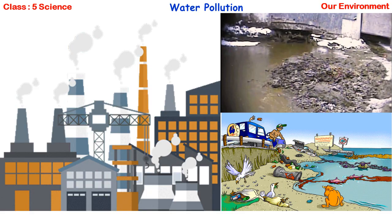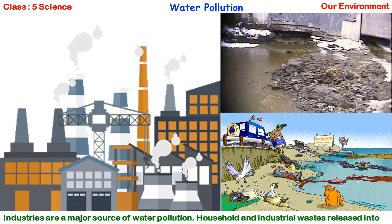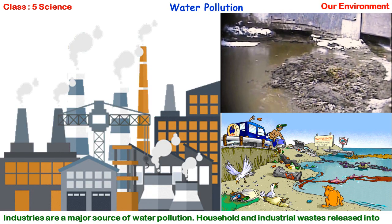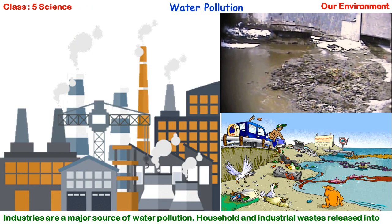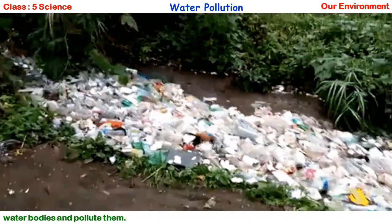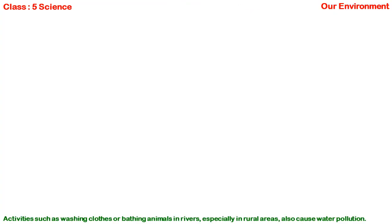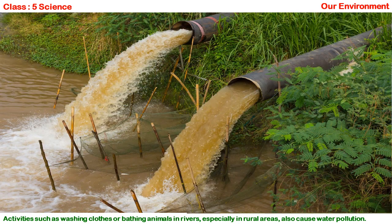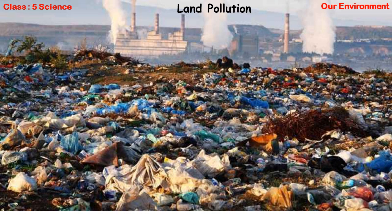Water pollution. Industries are a major source of water pollution. Household and industrial wastes released into water bodies pollute them. Activities such as washing clothes or bathing animals in rivers, especially in rural areas, also cause water pollution.